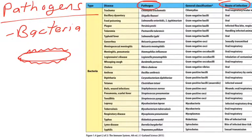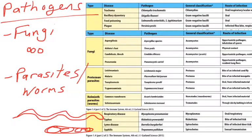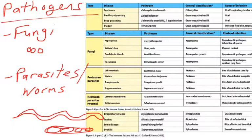So the immune system has to be able to detect and defend against viruses and bacteria. The last two classes of pathogens are fungi and parasites, or worms — large multicellular pathogens. Your book lists lots of different pathogens in the fungi class or the parasitic worms class. The body has to be able to detect them and attack them. We'll probably spend most of the time talking about viruses and bacteria, but we'll also talk about fungi and worms as well.